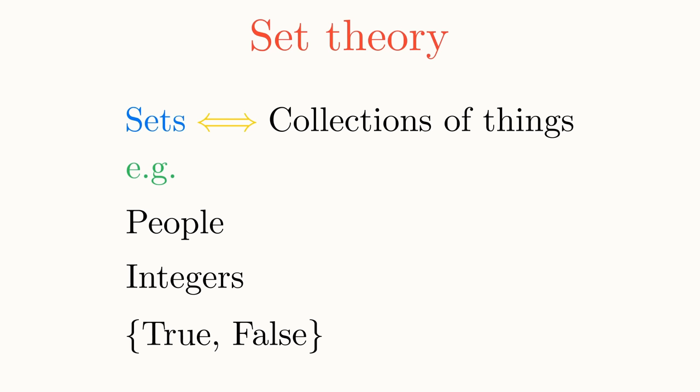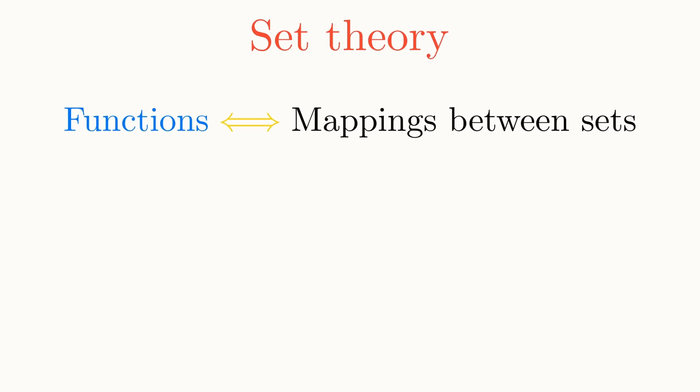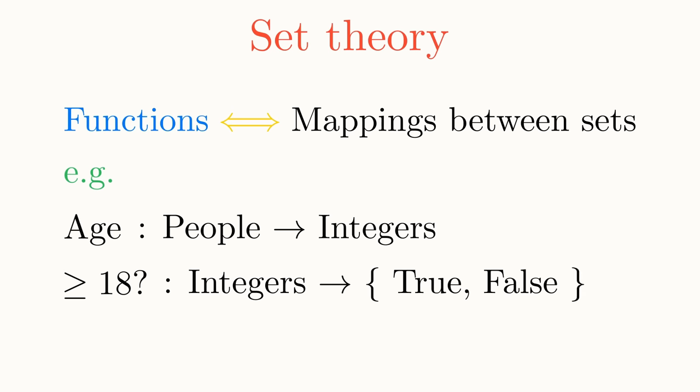The other key part of set theory is looking at how we can relate sets, which is done via functions. A function is an assignment of each element of one set to an element in another set. This assignment is also called a mapping. For example, the function age could assign each person in the set people to a number in the set integers that corresponds to that person's age. Another function called greater than or equal to 18 could be one that assigns each integer to either true or false, depending on whether it is greater than or equal to 18.